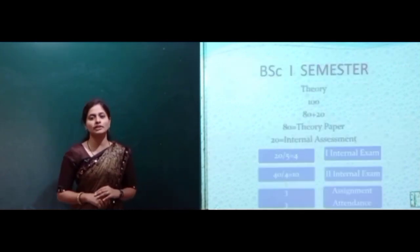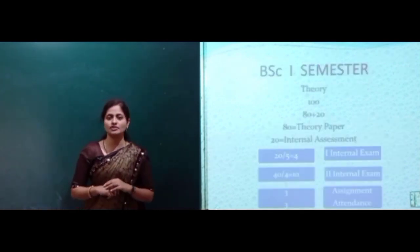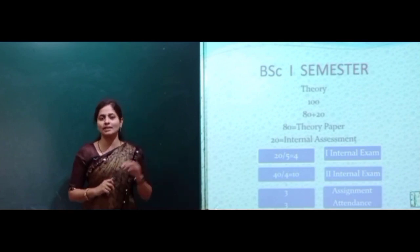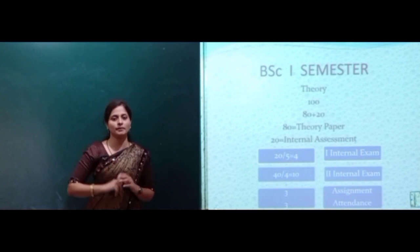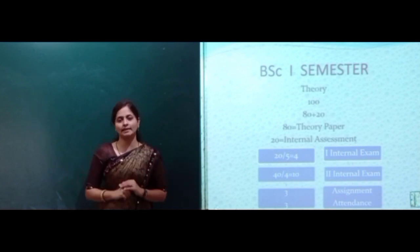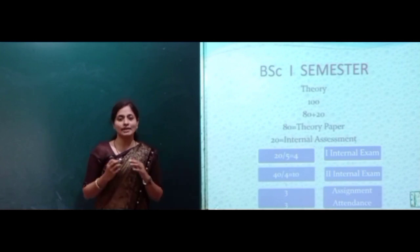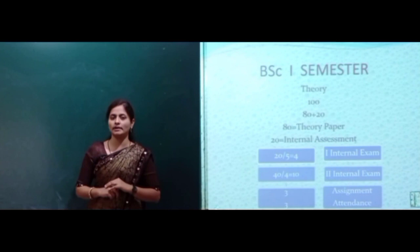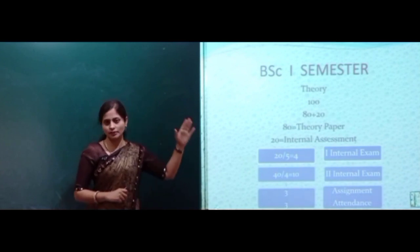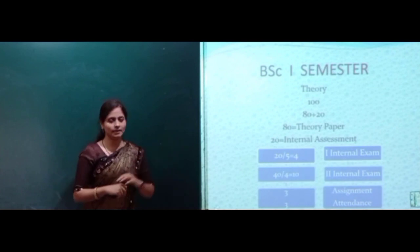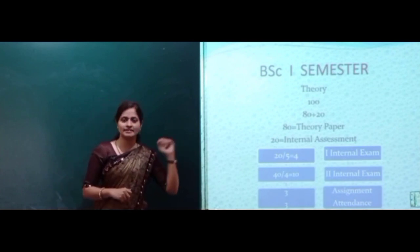Next we will move to your BSc first semester marks distribution. For BSc first semester in physics, you have 150 marks: 100 for the theory part and 50 for the practical part. The 100 marks can be divided into 80 plus 20. 80 is for the theory paper and 20 for internal assessment.